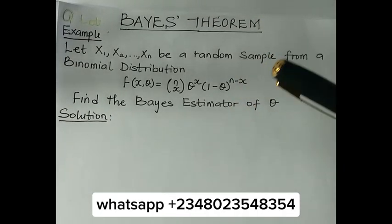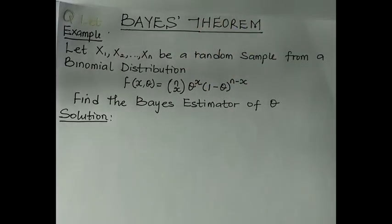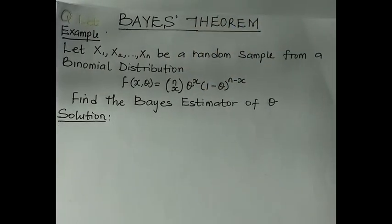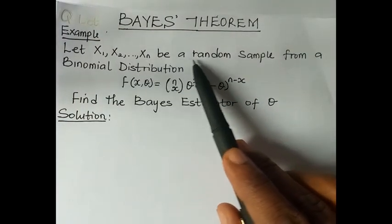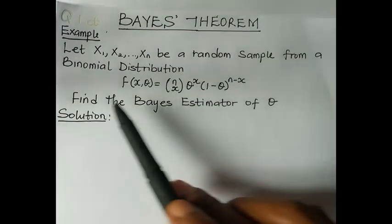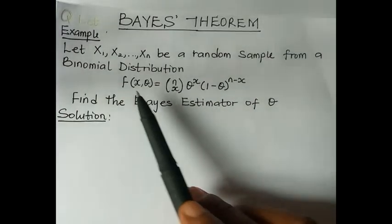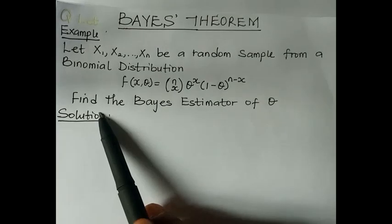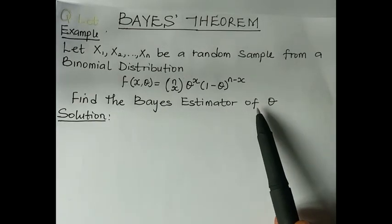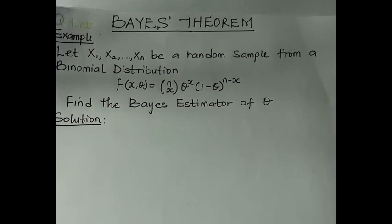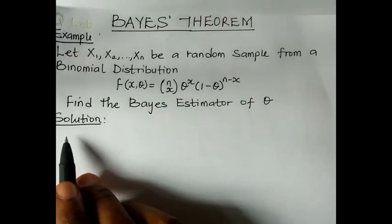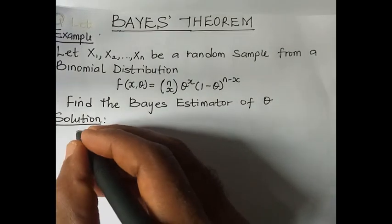Let x1, x2, ..., xn be a random sample from a binomial distribution. We need to find the Bayes estimator of theta. For more content like this, please subscribe to this channel. Here is the solution.